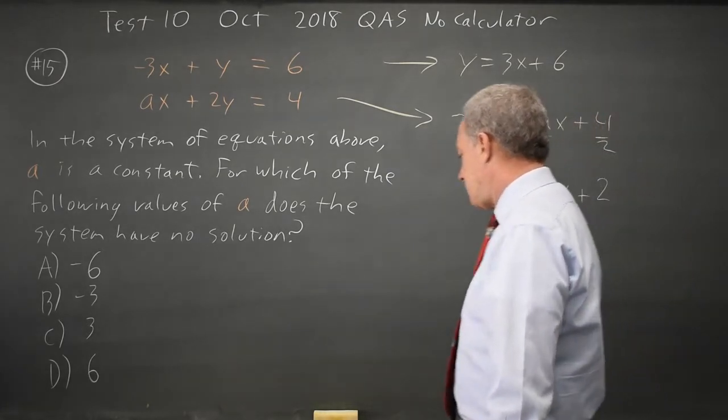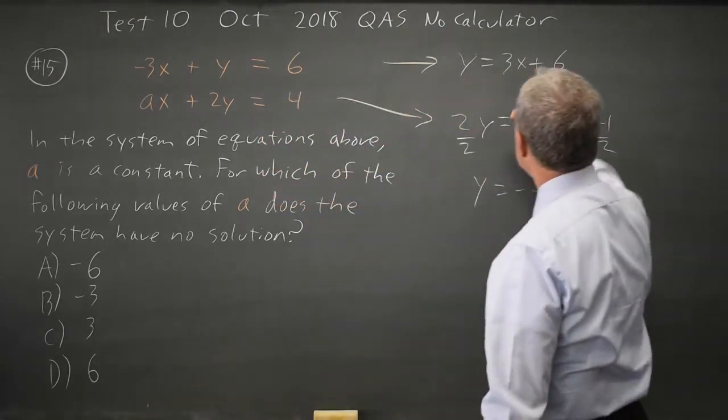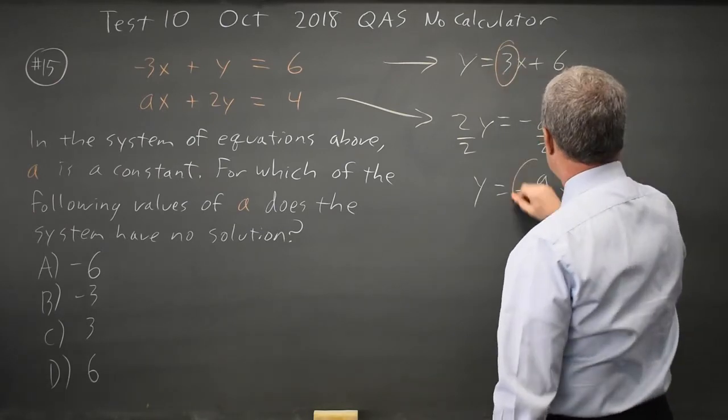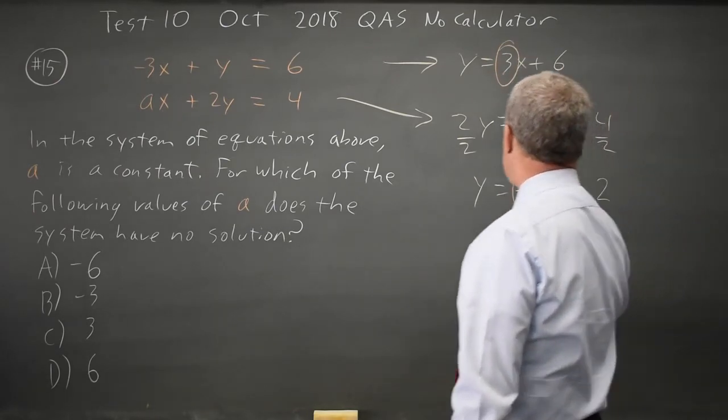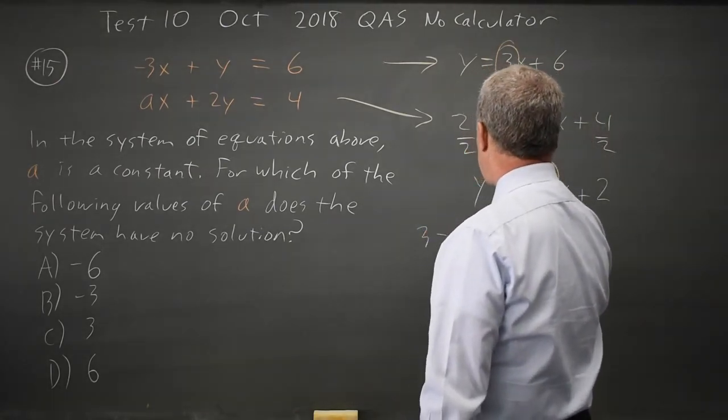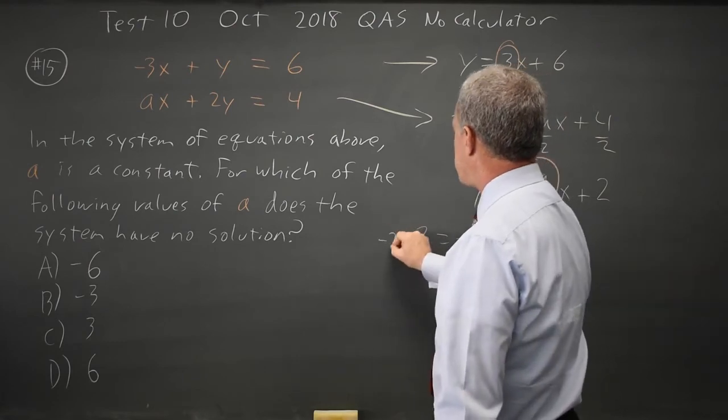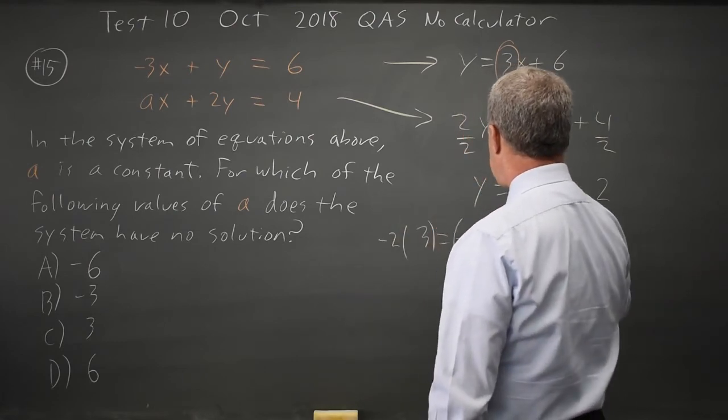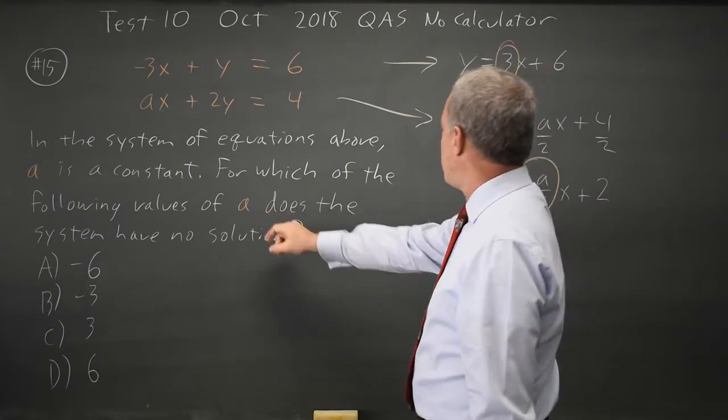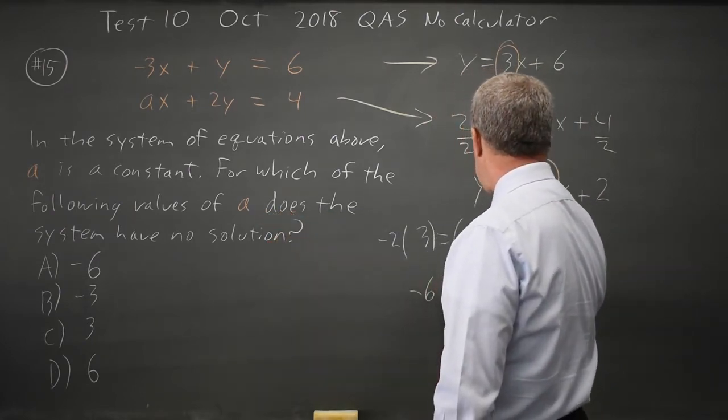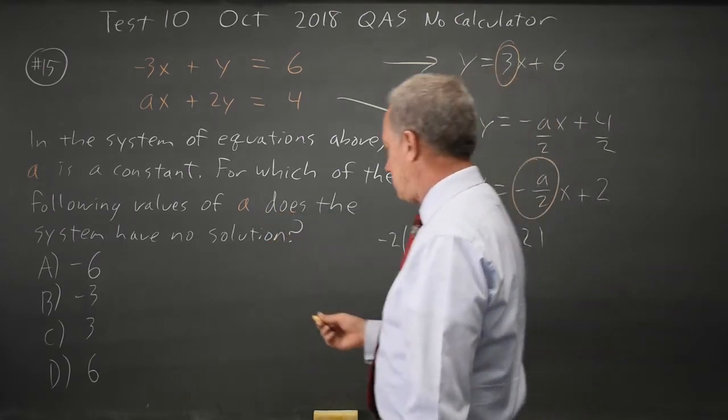If these are the same slope parallel, these two numbers are equal. 3 equals negative a over 2. Multiply both sides by negative 2 to get a by itself because they're asking for what value of a, and you get negative 6 equals a. Choice A.